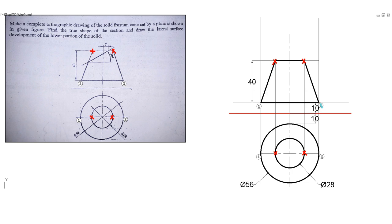Now we have to place the cutting plane. This cutting plane is at a distance of 7 mm from the top point, and it is inclined at an angle of 30 degrees with the base. We extend it downward so that it cuts the cone. The part below the cutting plane should be drawn dark, whereas the part above the cutting plane should be represented by a light line.